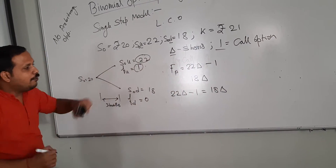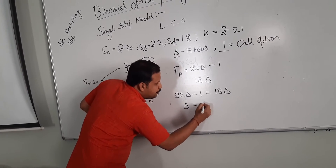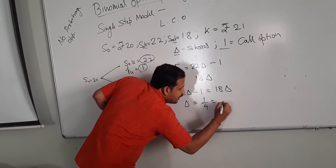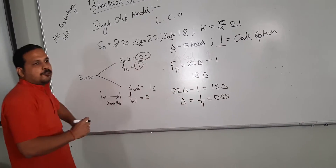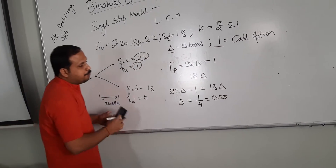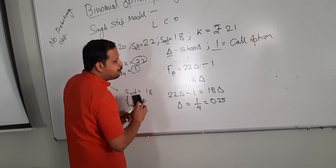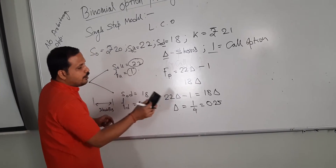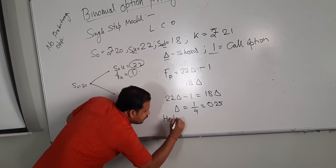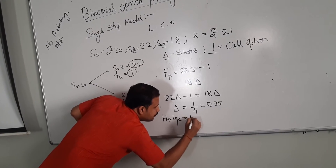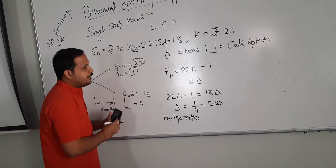If we solve for delta, we will get delta is equal to 1 upon 4, that is equal to 0.25. So in this portfolio, we will be holding 0.25 number of shares and one call option. This delta is termed as the hedge ratio.